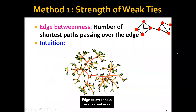One idea is to base community detection on the notion of edge betweenness. Edge betweenness means the number of shortest paths passing over an edge. For example, we can see that the edge betweenness of this particular edge is actually very high, because a lot of shortest paths between nodes in this graph will have to go through this edge.